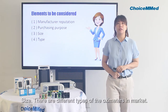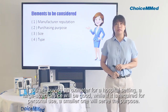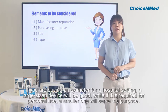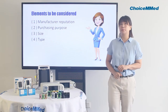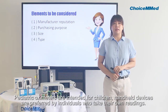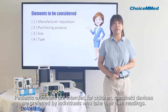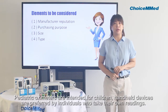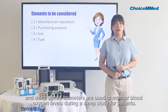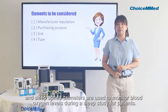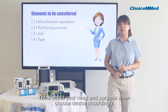Size is another factor. There are different types of oximeters on the market. If you are buying an oximeter for hospital use, a large-sized device will be good. If it is required for personal use, a small one will serve the purpose. Pediatric oximeters are intended for children. Handheld devices are preferred by individuals who take their own readings. Sleep apnea oximeters are used to monitor blood oxygen levels during a sleep study. Think about your needs and purpose when choosing a device accordingly.